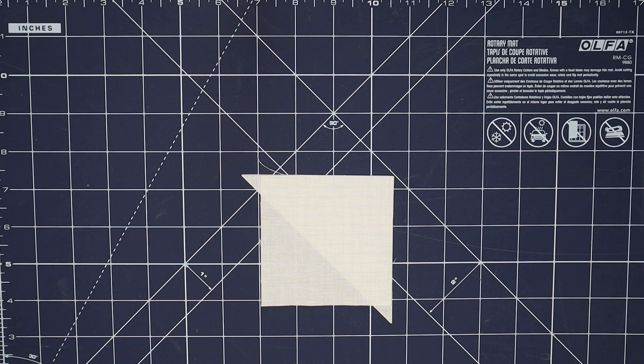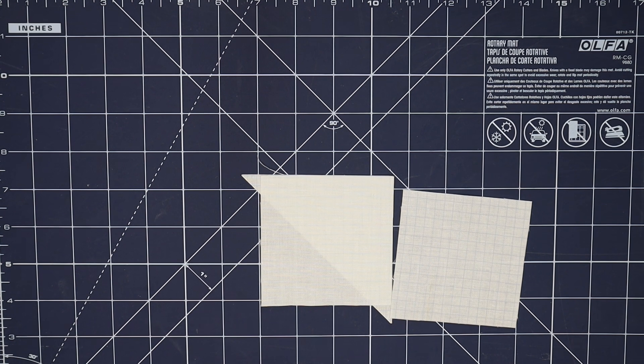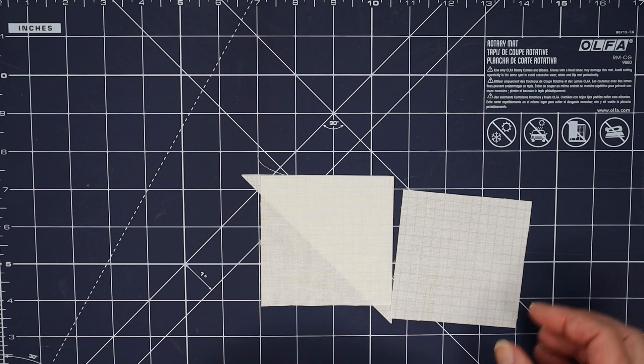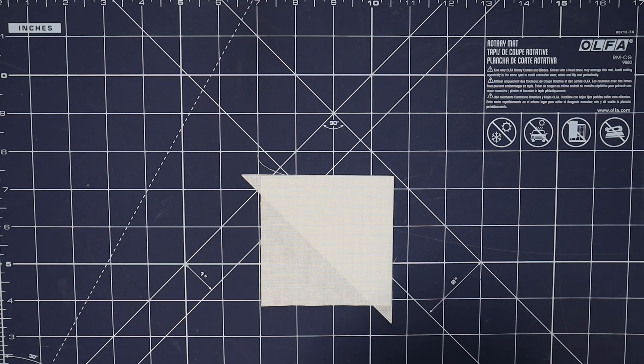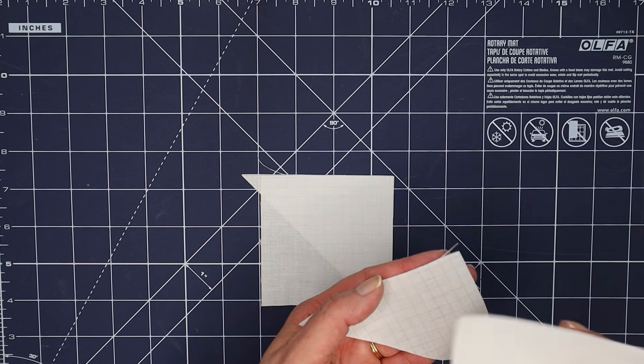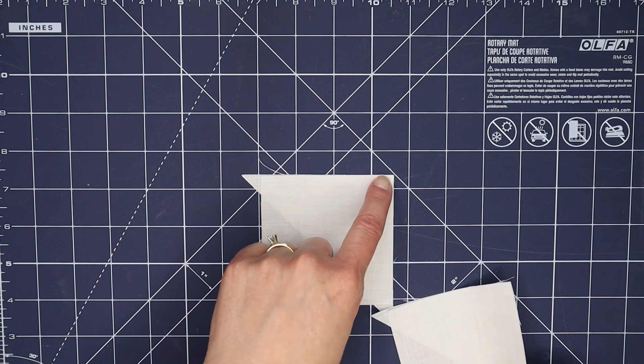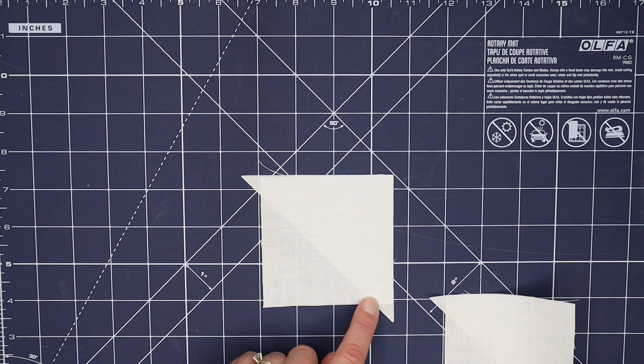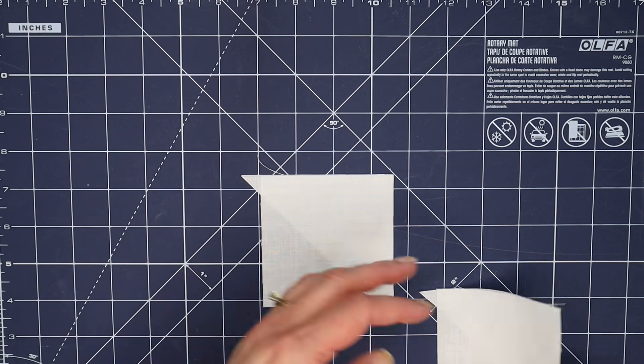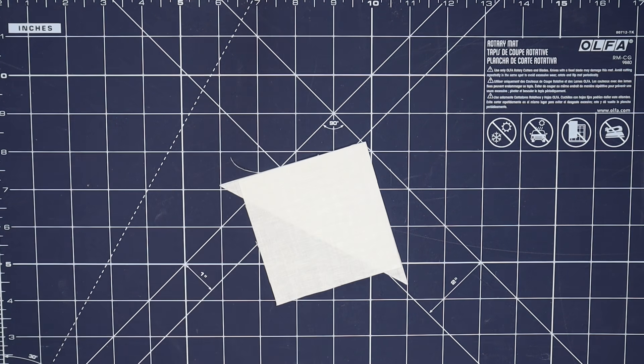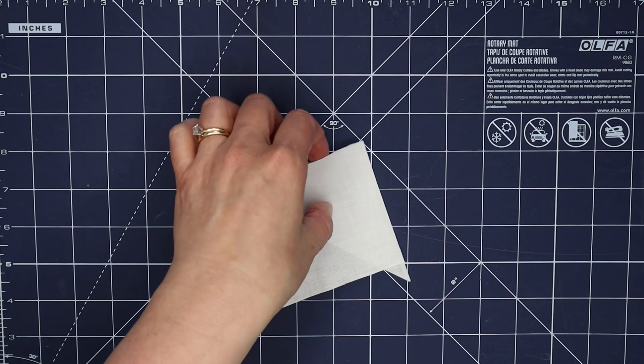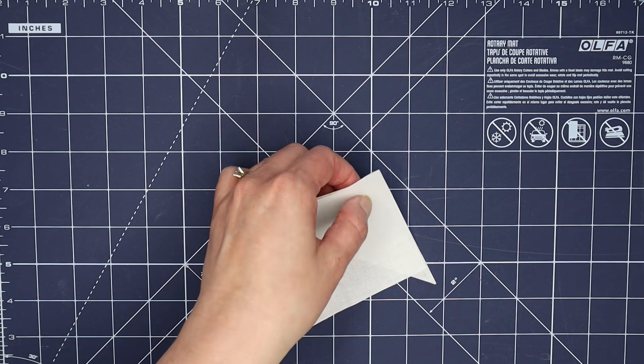We're going to take our background squares and I'm laying the square over the top of the triangle because I want to start sewing here and towards this point, and that's the best way that I have been able to get a good clean seam so I want to make sure that you guys have success.